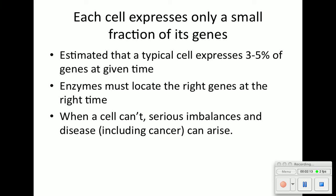A cell expresses only a small fraction of its genes — it's estimated between 3 to 5% of genes at a given time. Enzymes must locate the right genes at the right time. When a cell can't, serious imbalances can occur as well as some diseases.